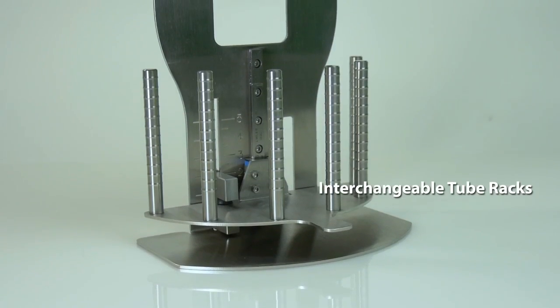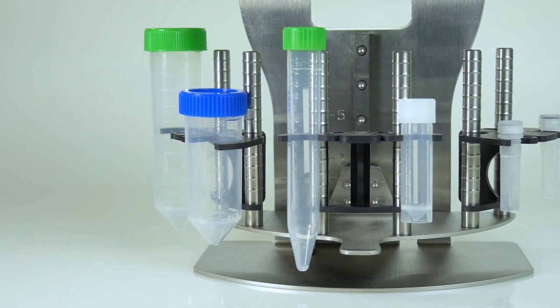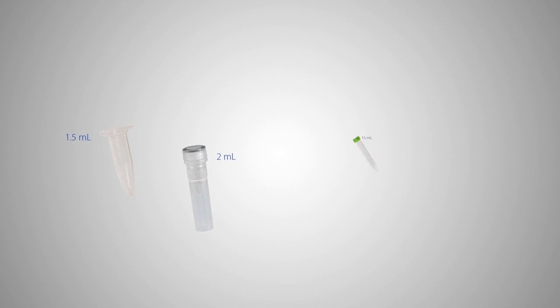The OmniPrep 6 is configured with interchangeable tube racks to support sample processing in a variety of sample tubes from 1.5ml to 50ml.